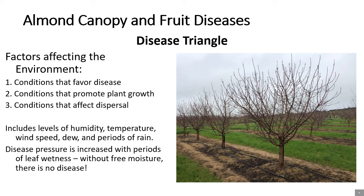Periods of dew can also increase disease risk, and this is more important with secondary cycles of disease within a tree. A secondary cycle is the infections that occur after the host is already infected. Dew has a strong influence on rust, alternaria, and the rate of anthracnose infections within an orchard.